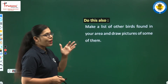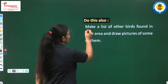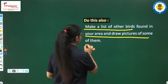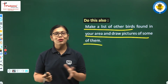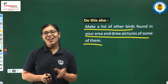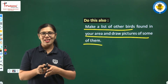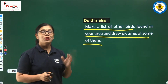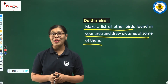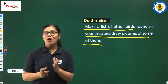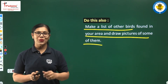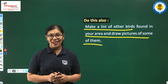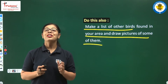You have to do one activity at the start of this chapter. What you have to do is make a list of other birds which are found in your area and draw pictures of some of them. Find out the birds present in your area, ask someone who knows their names, and also draw pictures of some of these birds.